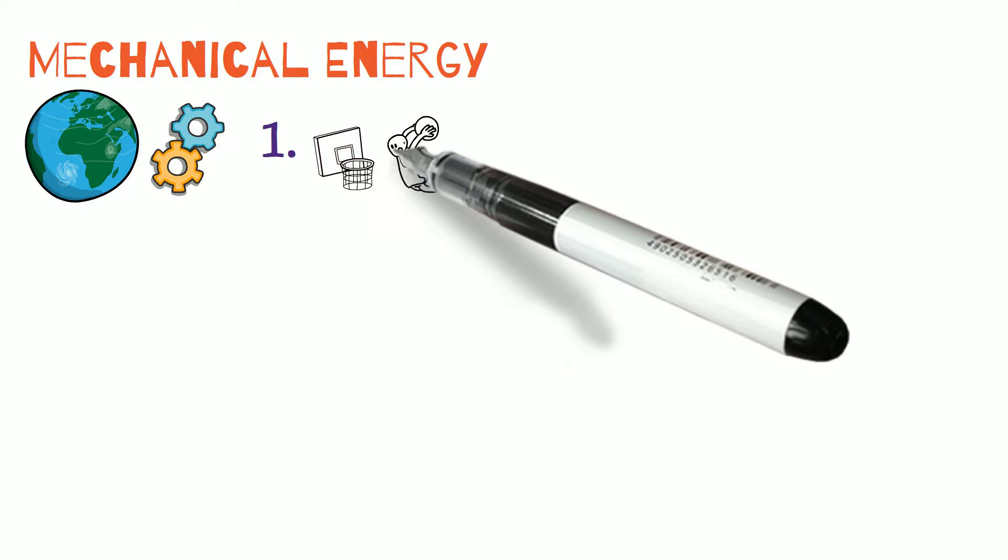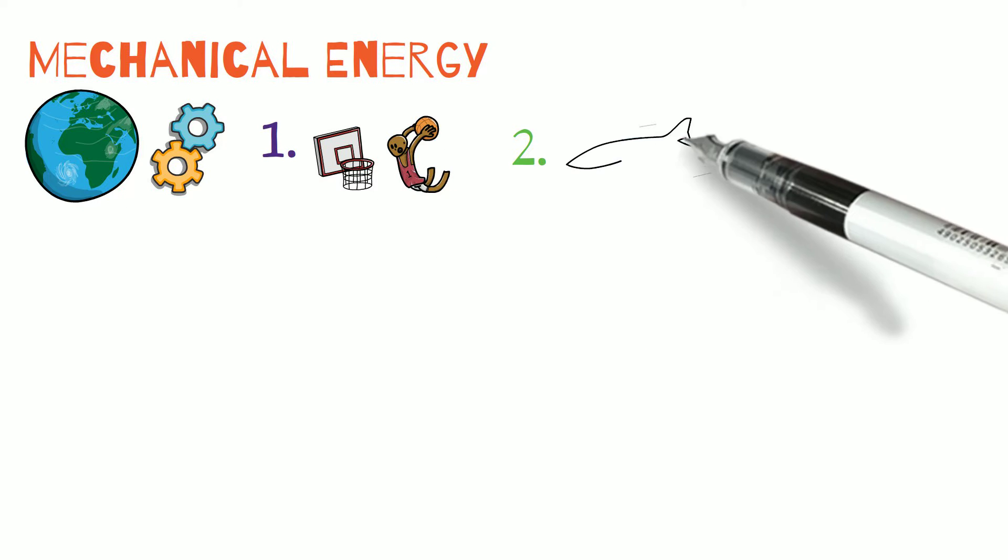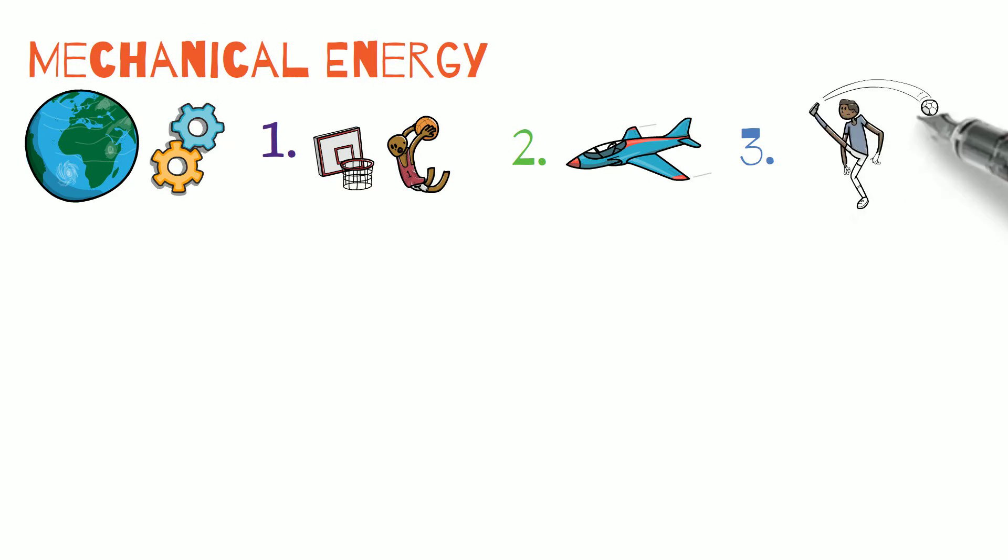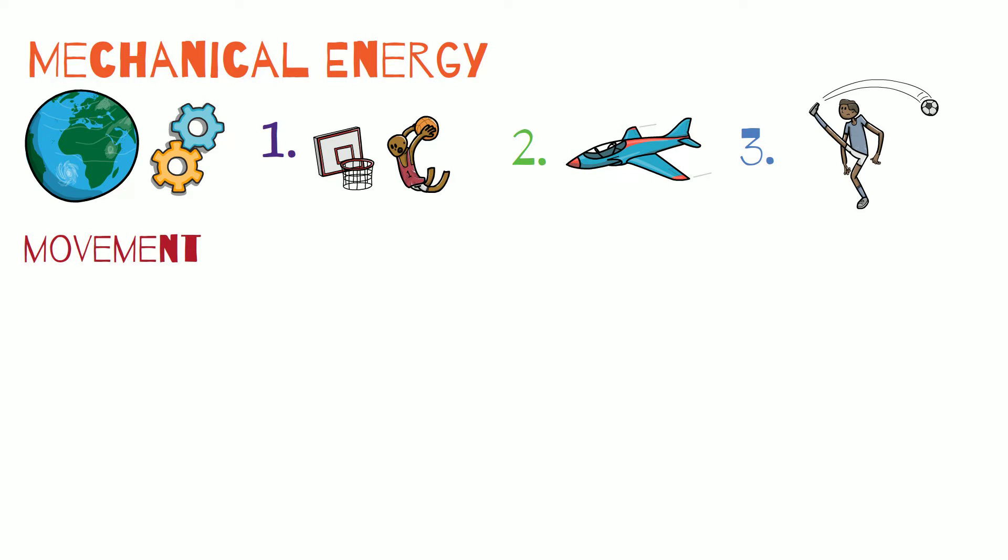A few examples of mechanical energy are a child throwing a basketball, a plane speeding down the runway, and a child kicking a ball as it propels forward. In all of these examples the objects are moving.